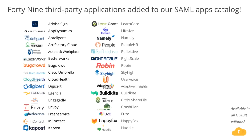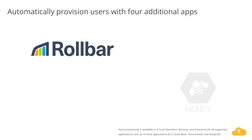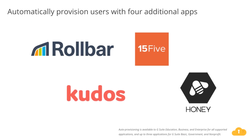With single sign-on or SSO, your users can sign in just one time to access all of their enterprise cloud applications. For the month of March, we're adding an additional 49 applications with pre-integrated SSO support to our third-party apps catalog, including Bug Crowd, Huddle, Pipedrive, and Saba, just to name a few. You can find our full list of pre-integrated applications and instructions for installing them in the Help Center. With user provisioning, once you've set up SAML-integrated apps, you can set up user provisioning to create, modify, or delete a user's identity in G Suite, and those changes are automatically made in the third-party app. This month, we're adding auto-provisioning support for four new apps: Kudos, 15Five, Rollbar, and Honey. The setup and configuration of user provisioning varies from app to app, so check out the Help Center to learn more.